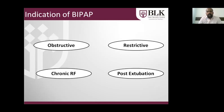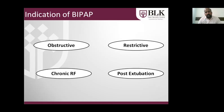The indications of BiPAP in the Pediatric Intensive Care Unit include obstructive diseases like bronchiolitis and asthma, restrictive lung disease such as parenchymal diseases like pneumonias, and chronic respiratory failure conditions like neuromuscular disorders such as Duchenne muscular dystrophy or SMA. It can also be used in hypoventilation syndromes. Post-extubation, it is used effectively where children ventilated invasively for a prolonged period are extubated onto BiPAP and gradually weaned off, significantly decreasing reintubation chances.